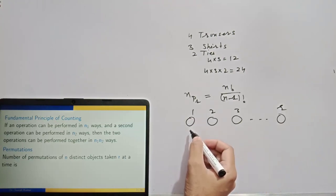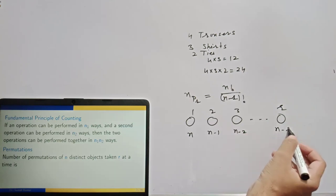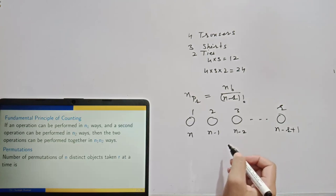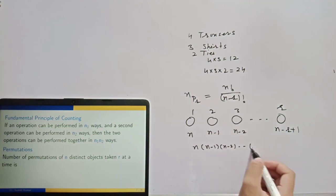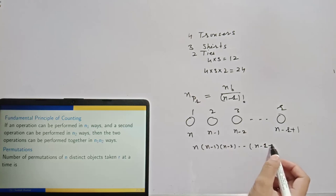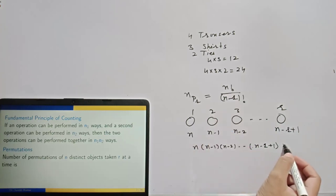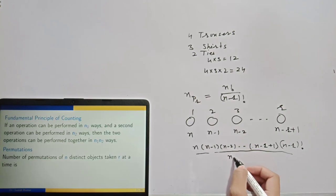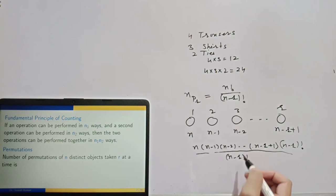The first place can be filled in N ways out of N things. The second in N minus 1 ways, the third in N minus 2 ways, and the Rth in N minus R plus 1 ways. So the total number of ways from the Fundamental Principle of Counting is the product of these. You can rewrite this product by multiplying and dividing by N minus R factorial — the numerator becomes N factorial and the denominator is N minus R factorial.